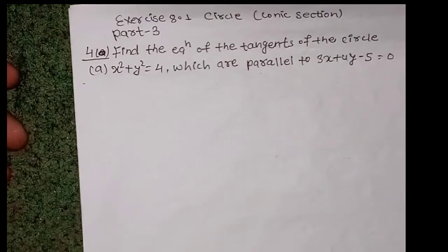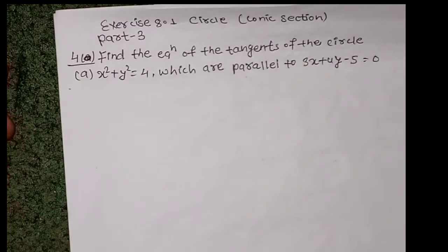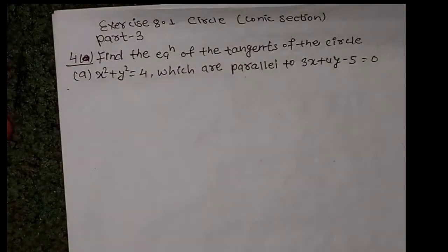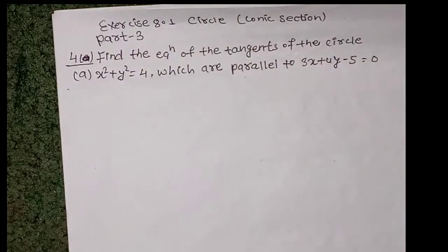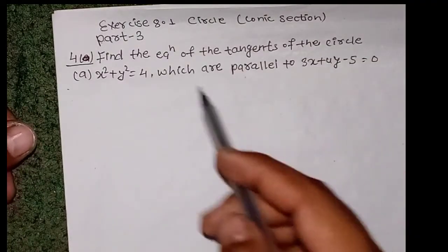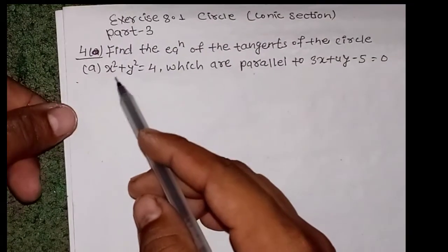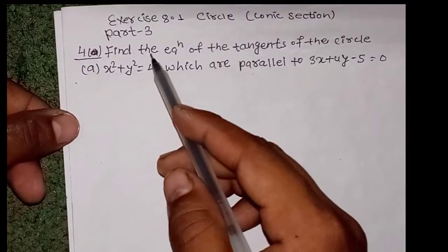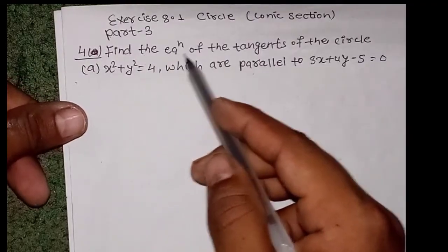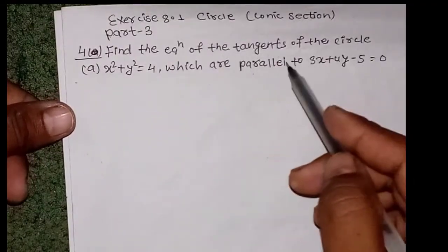Hello and Namaste guys. In this exercise on Point 1 Circle Coding Section Part 3, I am going to solve Question 4. The question asks: find the equation of the tangent of the circle.